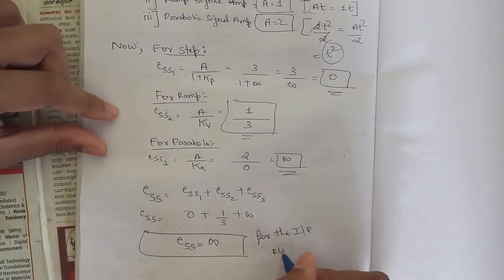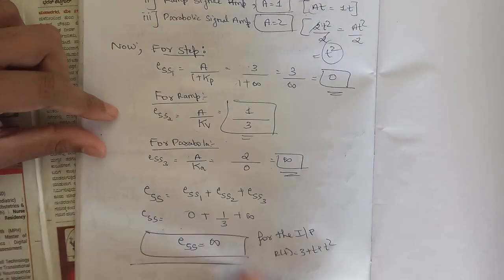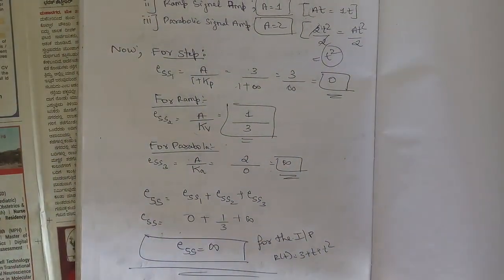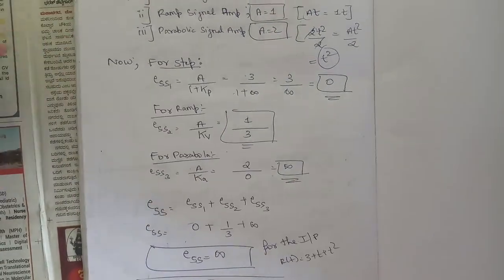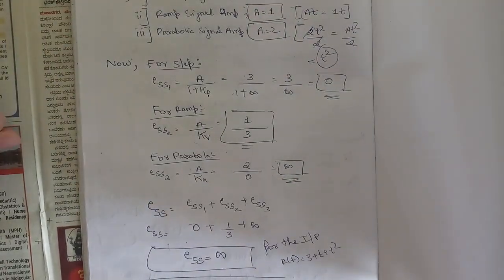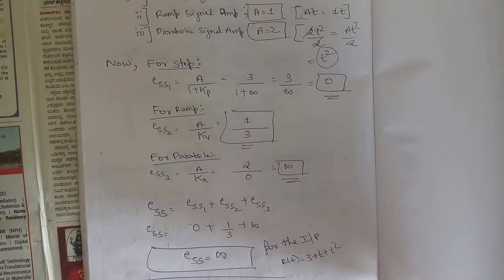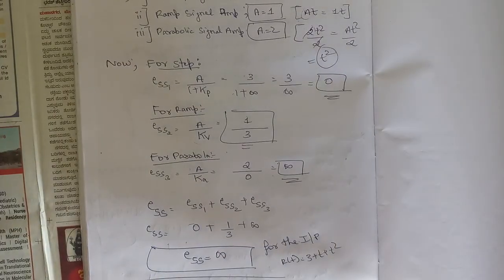So the final steady-state error for the input r(t) = 3 + t + t² is infinity. That's all for this session. Hope you understood these problems clearly. Please like, share, and subscribe — we will be coming up with many more videos in this module including derivations. Thank you.